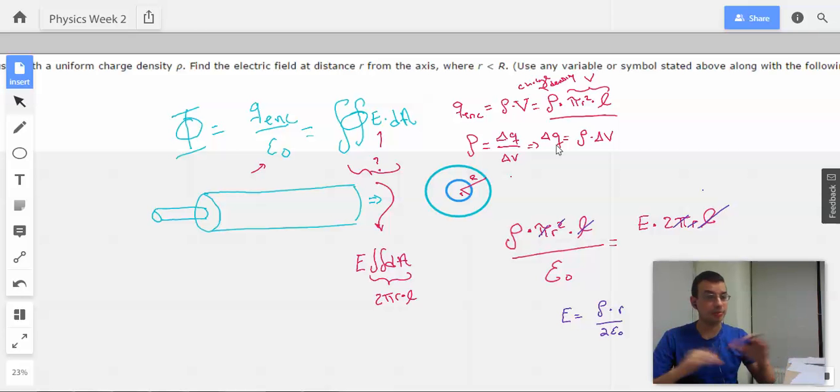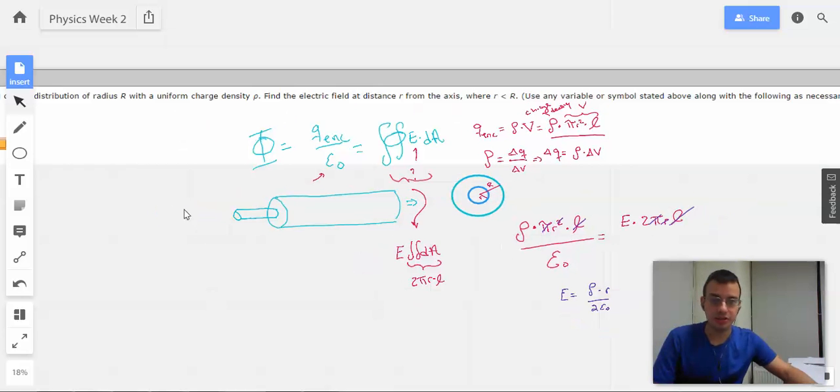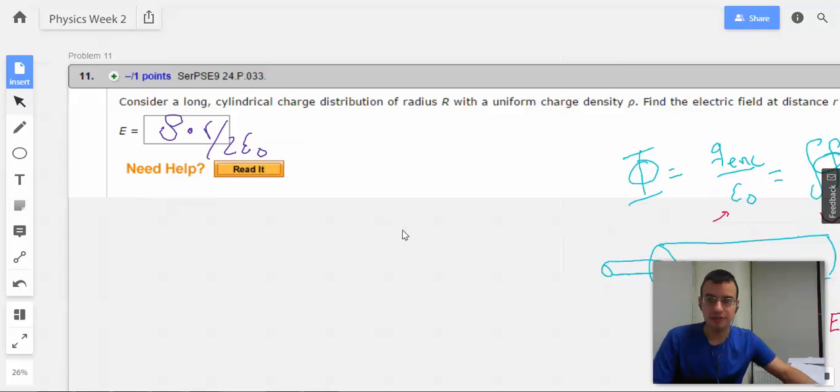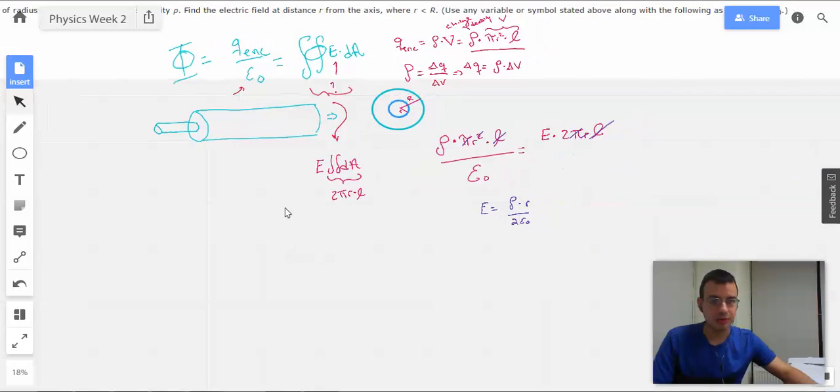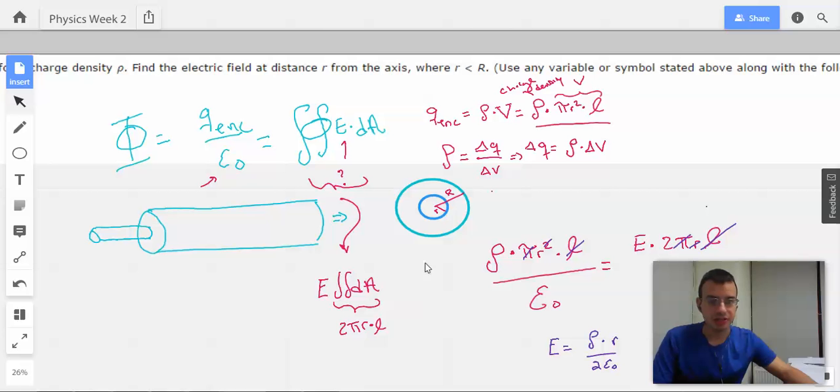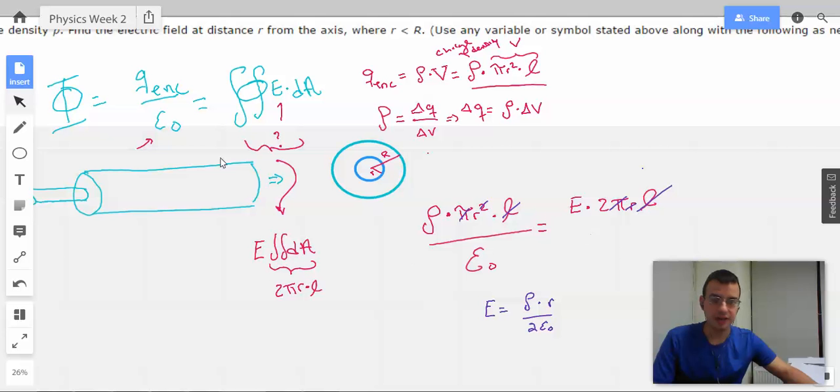As it got bigger you wouldn't be picking up more charge and we wouldn't be able to use the assumption that q enclosed is just whatever the volume of the cylinder encompasses. So this is how you do this specific problem: using Gauss's law, getting familiar with it, going through this process of volume charge density, writing up Gauss's law, finding a volume and surface area, setting things equal and canceling out as necessary. All right, make sense? Sounds good. On to the next problem.